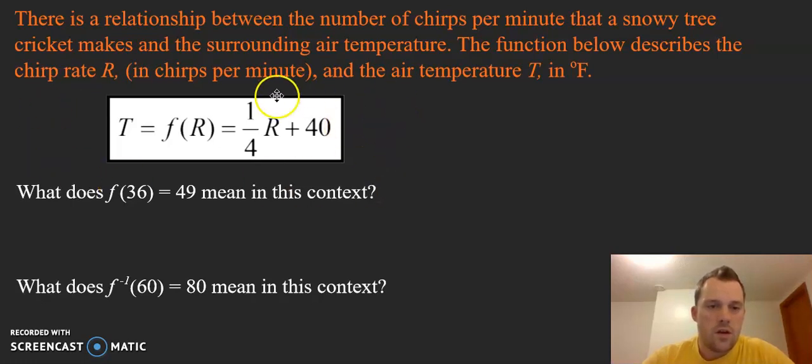This equation or function represents a relationship between the number of chirps per minute a snowy tree cricket makes and the temperature that the cricket is in.